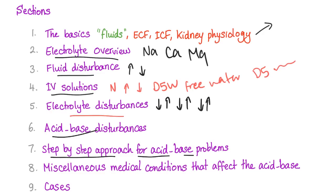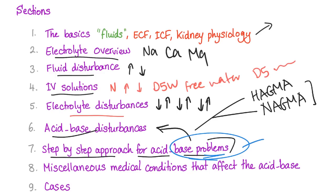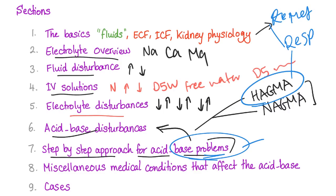We'll cover a step-by-step approach for acid-base problems — how to solve respiratory acidosis, respiratory alkalosis, metabolic acidosis, metabolic alkalosis. And of course there are two types of metabolic acidosis: high anion gap metabolic acidosis and normal anion gap metabolic acidosis. We'll explain all of this and how to solve problems with multiple disorders, because sometimes you can have high anion gap metabolic acidosis together with respiratory acidosis and metabolic alkalosis — all three in the same patient simultaneously. Yes, it can happen, and I'll tell you how to figure it out.